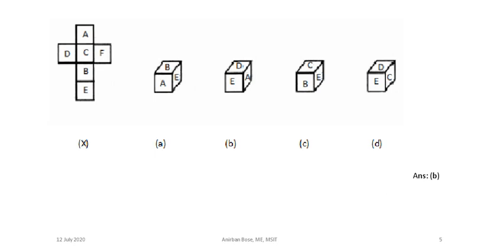Here in the next problem, A and B are opposite, C and E are opposite, and D and F are opposite. Mentally you can check: A and B consecutive — not possible. D and E — possible. In option C, C and E are opposite — not possible. D and C possible, but C and E not possible. Answer is B.